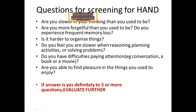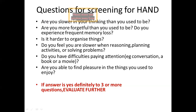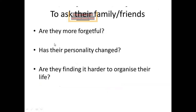Screening questions for HAND: Are you slower in your thinking than you used to be? Are you more forgetful than you used to be? Do you experience frequent memory loss? Is it harder to organize things? Do you feel you are slower when reasoning, planning activities, or solving problems? Do you have difficulties paying attention — for example in a conversation, a book, or a movie? Are you able to find pleasure in the things you used to enjoy? If the answer is 'yes, definitely' to three or more questions, we need to evaluate further. Family or friends can also provide history regarding forgetfulness, personality changes, or difficulty organizing.